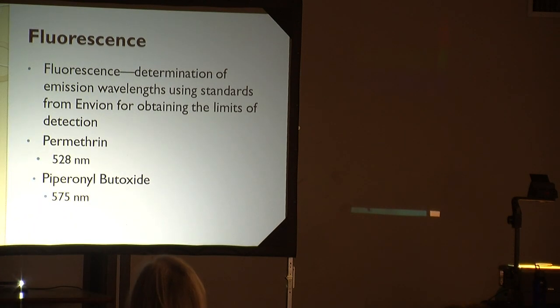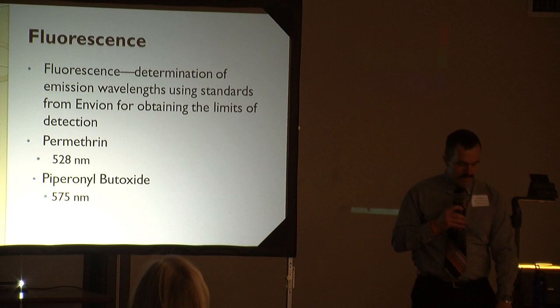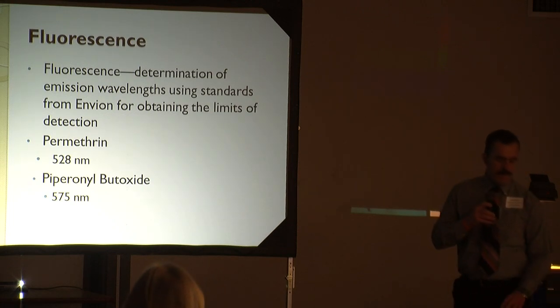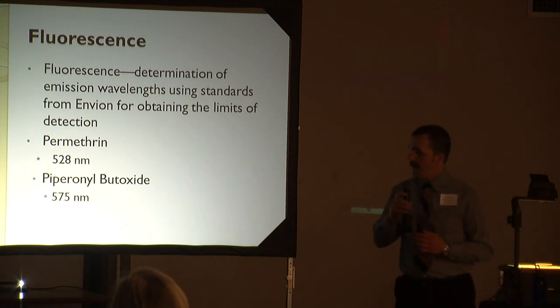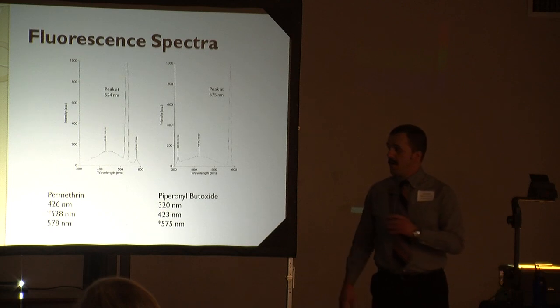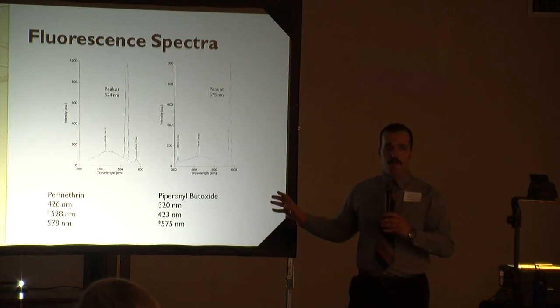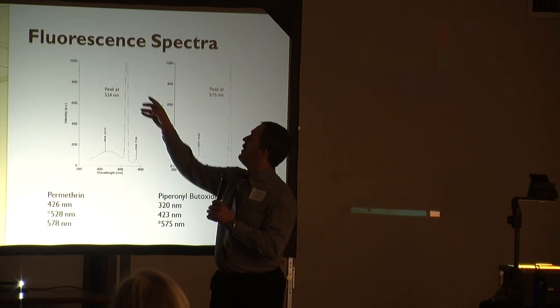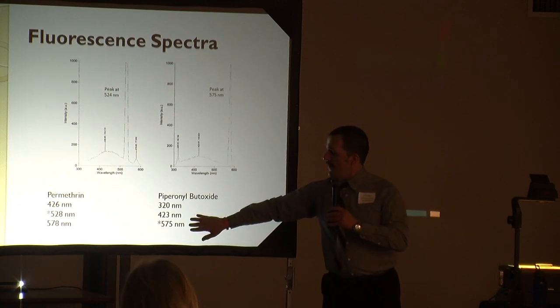We use fluorescence to determine the emission wavelength using the standard Envion for obtaining these limits of detection. Limits of detection is the smallest amount of component necessary to distinguish between the background and the species of interest. For permethrin that was around 528 nanometers, and for piperonyl butoxide we used 575 nanometers. Here are the fluorescent spectra. Permethrin over on your left - you can see how both of these emitted in several regions, but we were more concerned about where the strongest emission was, which was for permethrin around 528 and for piperonyl butoxide around 575 nanometers.